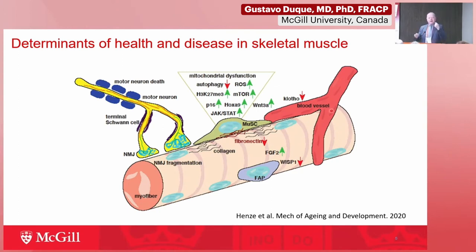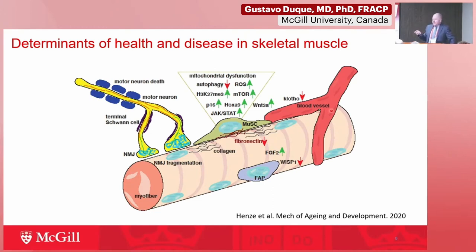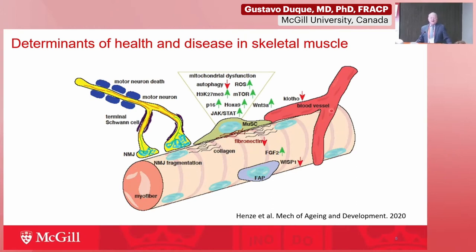The muscle also releases myokines and other factors into the circulation to regulate many functions around the body. These three major components — the neuromuscular junction, the stem and FAP cells, and blood vessels — are the components I'm going to describe regarding changes triggered by aging itself, covering what we call normal aging and what I would call unsuccessful aging.